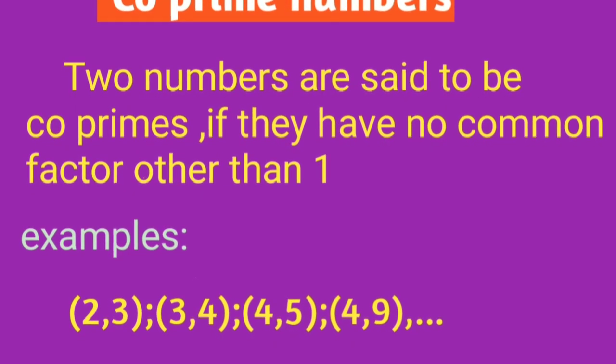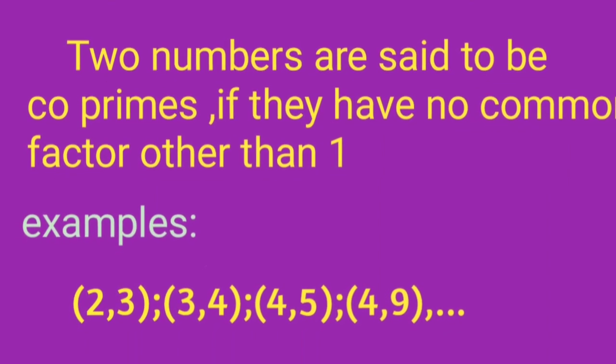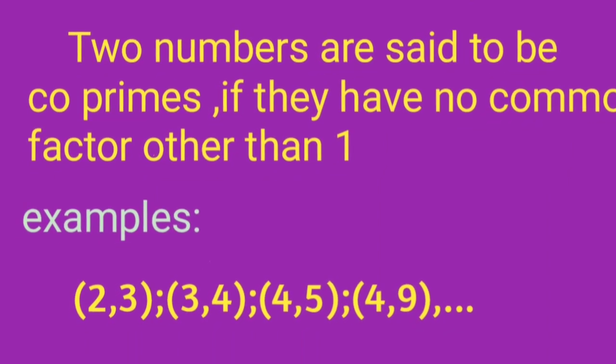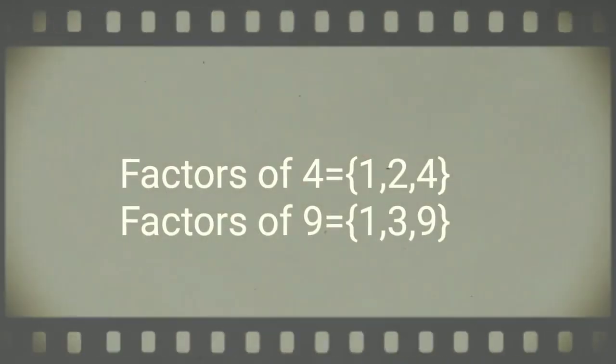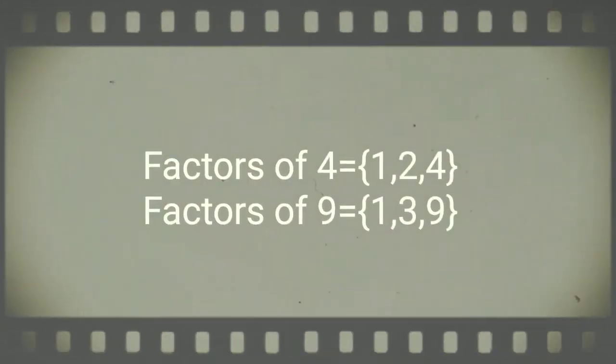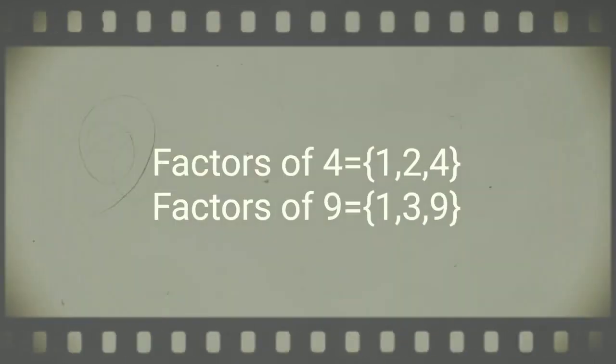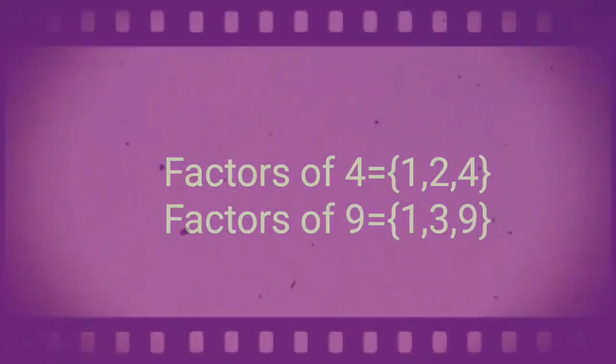Co-prime numbers: two numbers are said to be co-primes if they have no common factor other than 1. By observing 4 and 9, the factors of 4 are 1, 2, and 4. The factors of 9 are 1, 3, and 9. Here 4 and 9 have no common factor other than 1, so 4 and 9 are co-primes numbers.